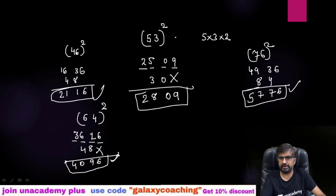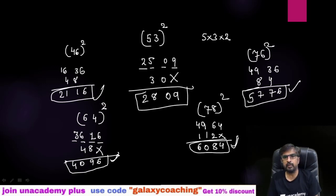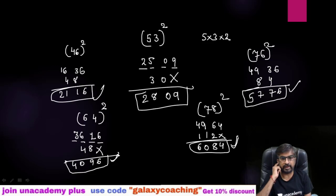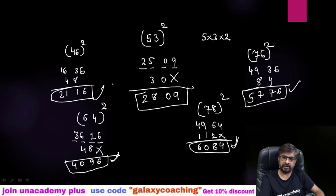Don't think that I am taking smaller digits only. Let me take one bigger digit, 78 square. So 7 square 49, 8 square 64, 7 times 8 is 56, 56 times 2 is 112. So cross here and 112 will come here. You can see how easily I can find out square of this.